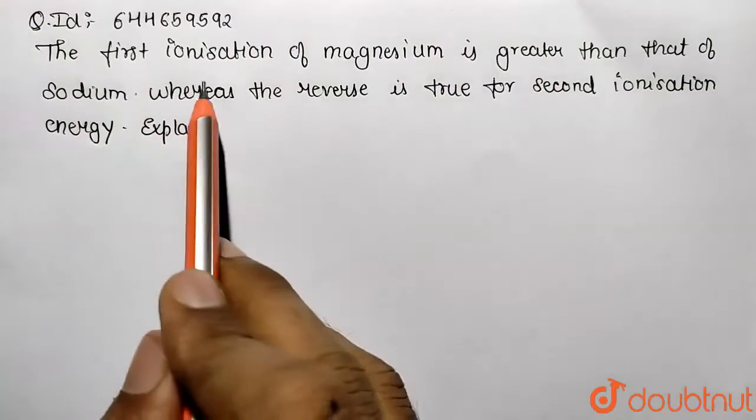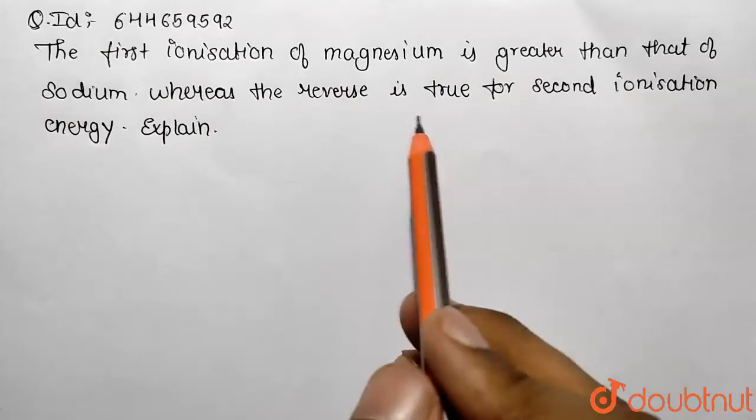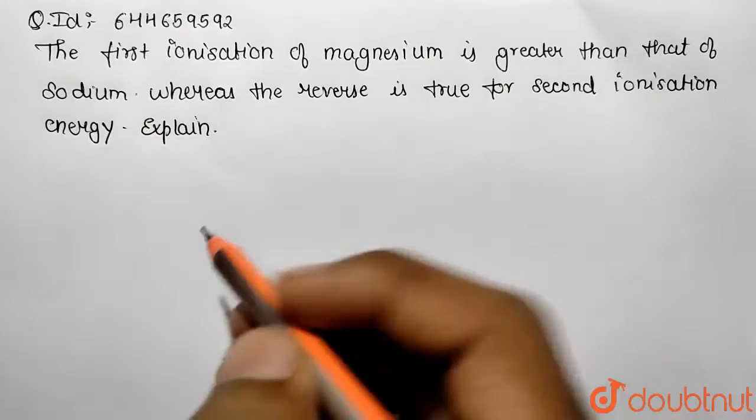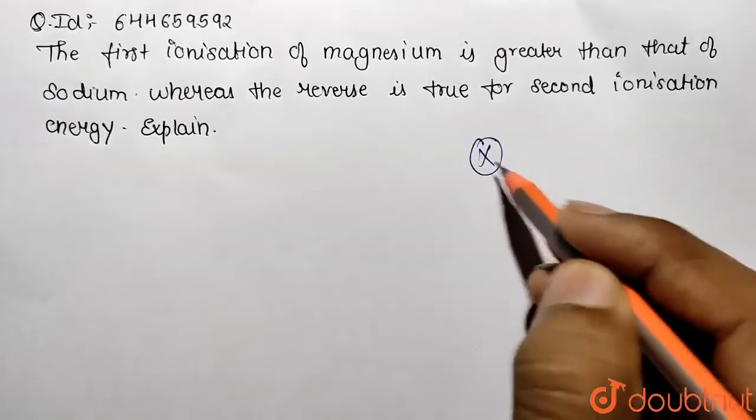Students, in this given question we need to answer: the first ionization value of magnesium is greater than that of sodium whereas reverse is true for the second ionization energy. Explain. So understand the case of ionization energy. What is ionization? Basically removal of an electron from its valence shell.